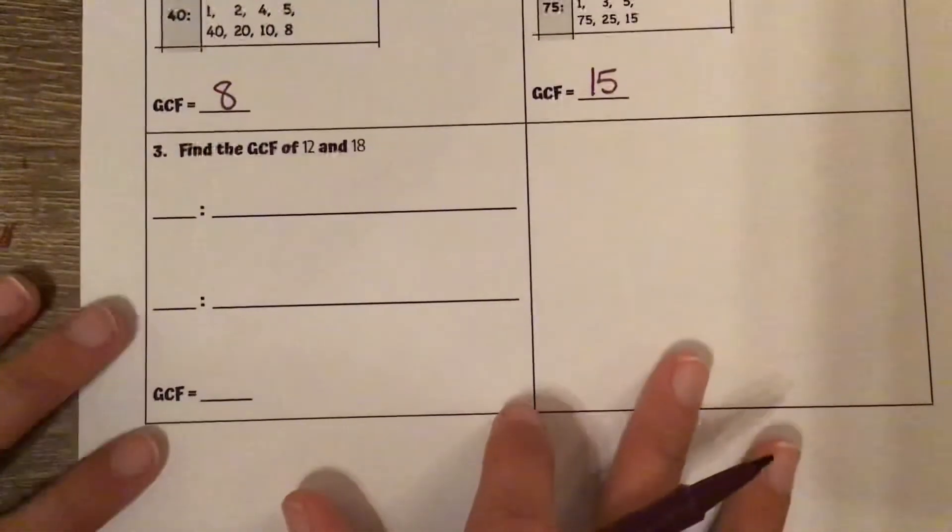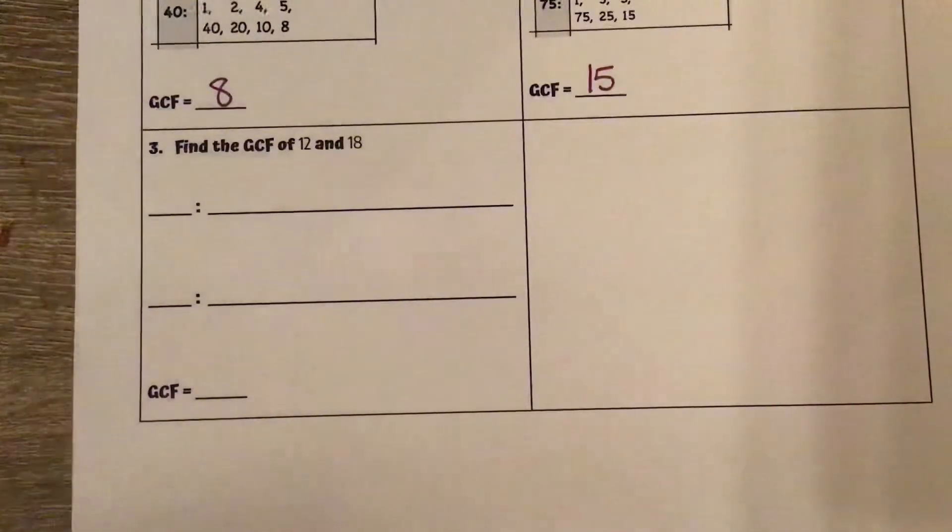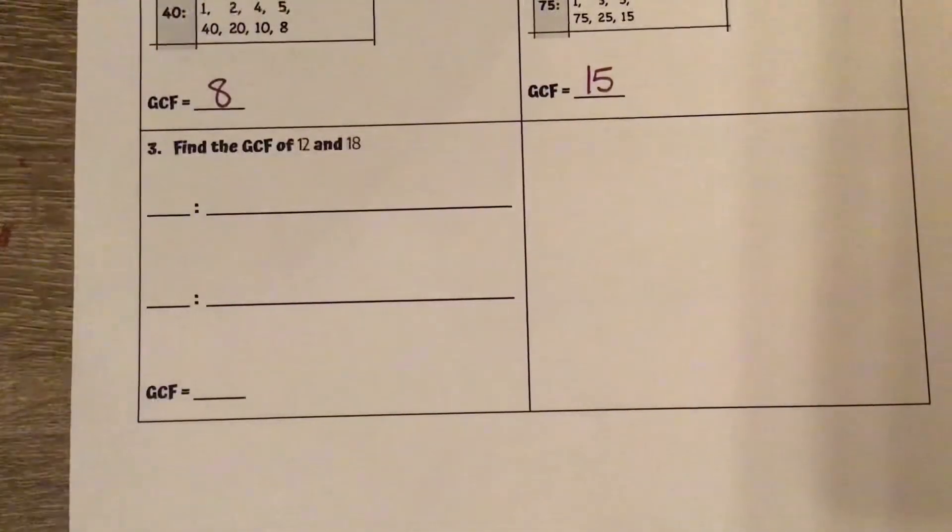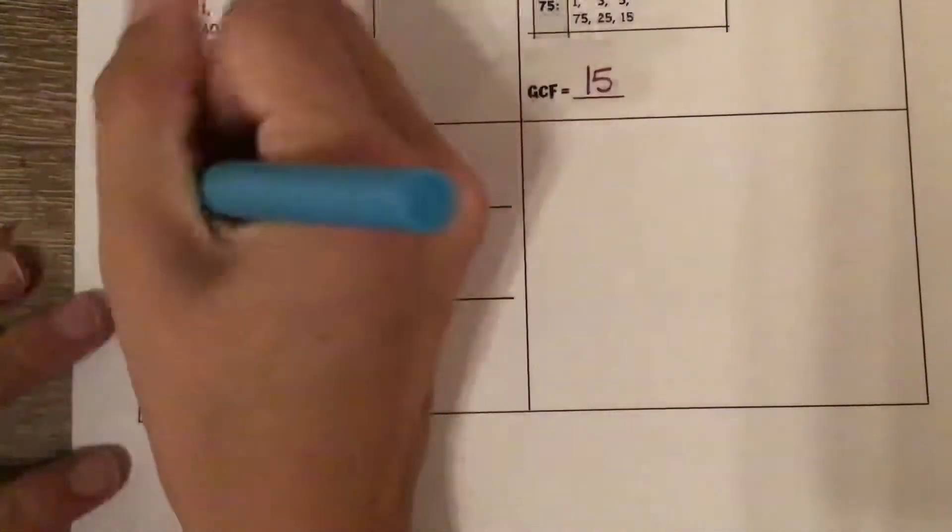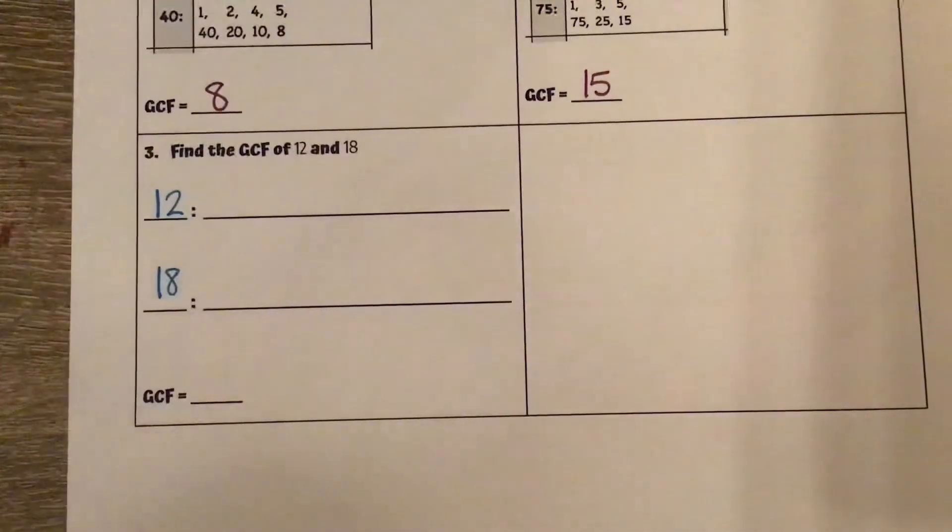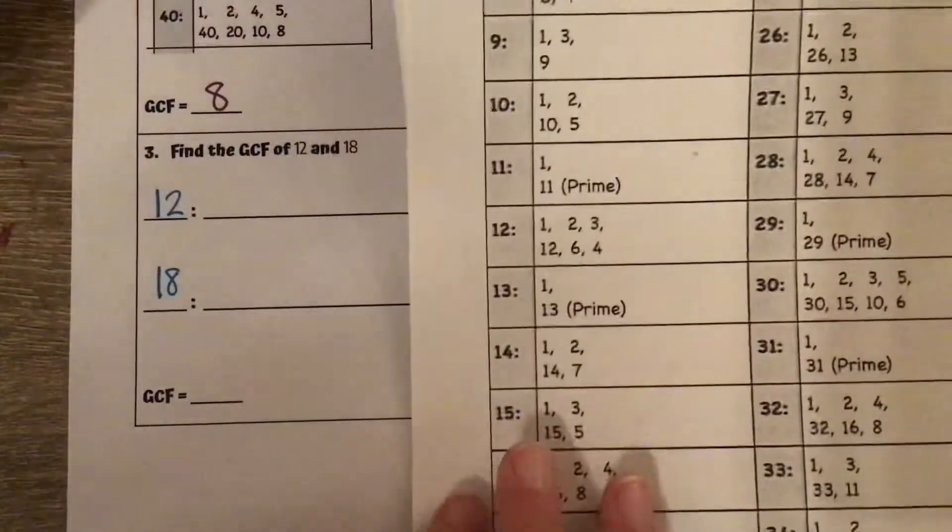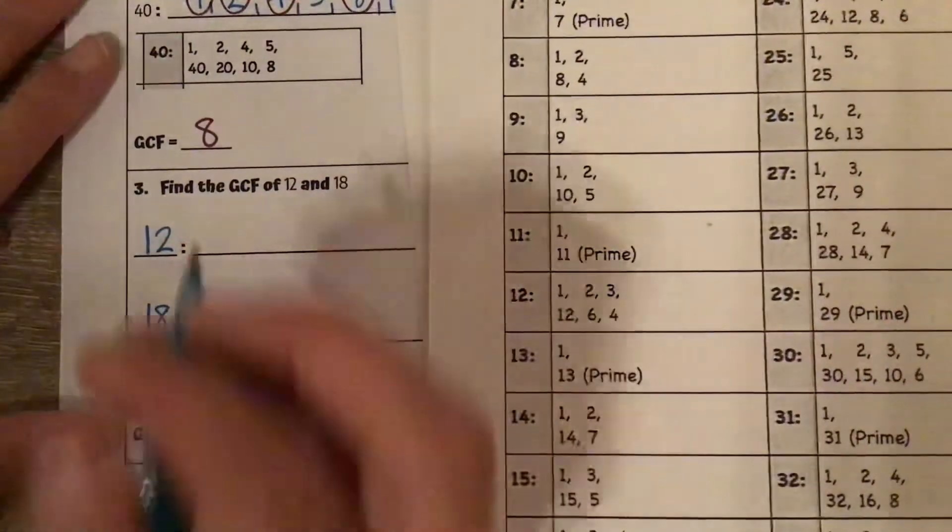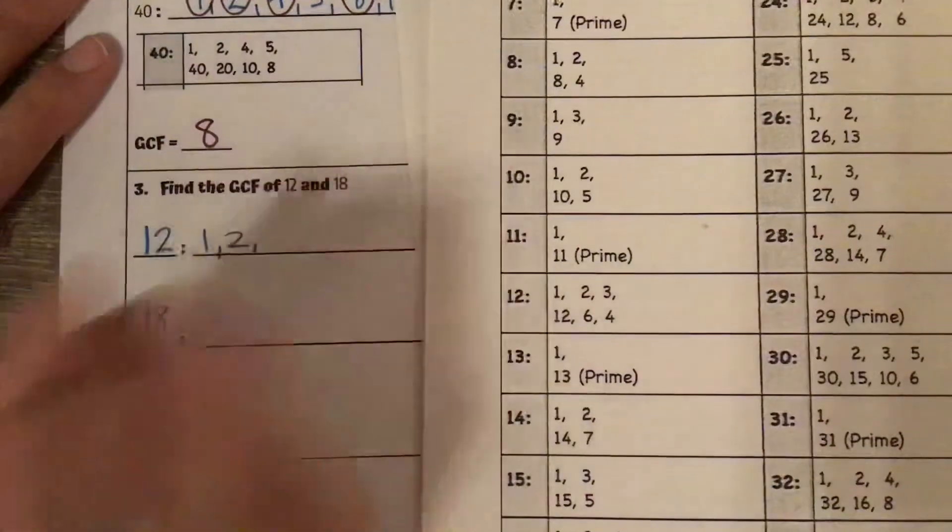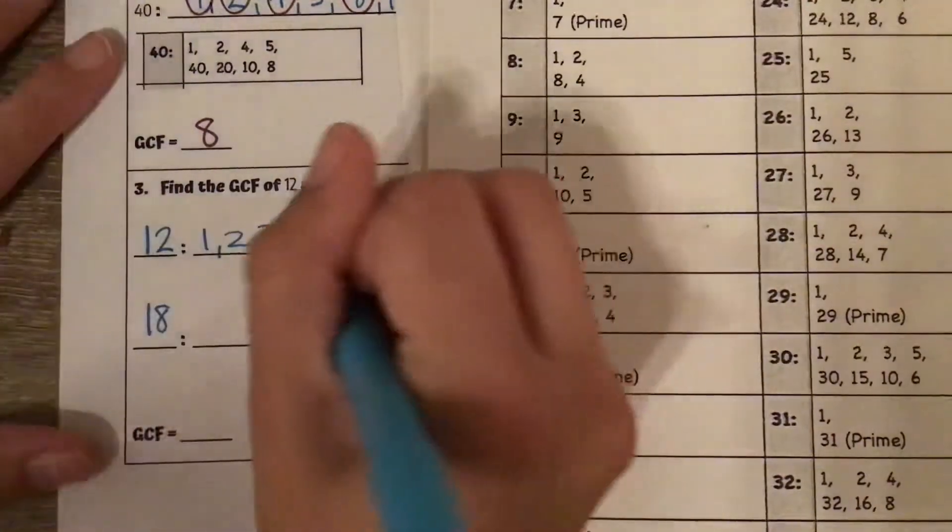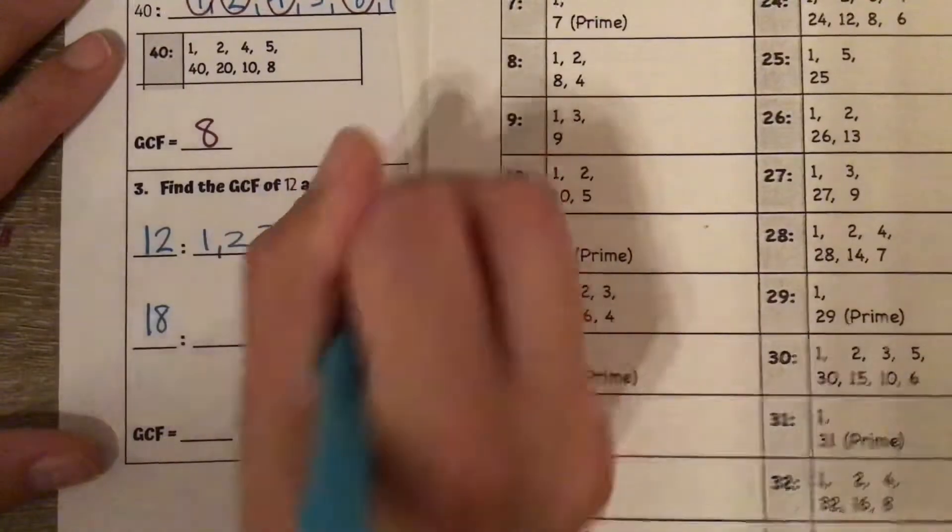Now let's look at actually having to use a factor chart instead of having the screenshots there. So finding the GCF of 12 and 18. I'm going to write down those two numbers, and then I'm going to find them on my factor chart. So 12, we've got the factors listed right here: 1, 2, 3, 4, 6, and 12.